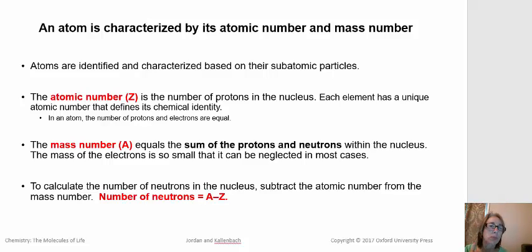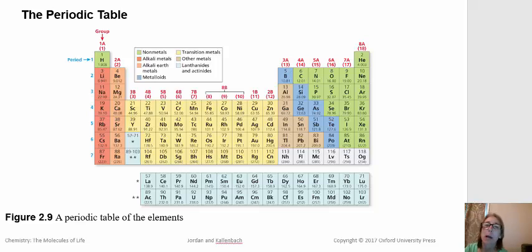When we look at subatomic particles - protons, neutrons, and electrons - if we know what element we're looking at, for example, capital letter O, means we're looking at oxygen.